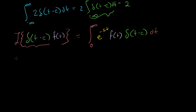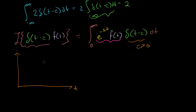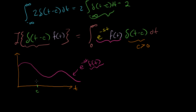Let me draw what we're trying to take the integral of. We only care from 0 to infinity, and I'll assume c is greater than 0 — that the delta function pops up somewhere on the positive t-axis. The first part, e to the minus st times f of t, is going to be some function. e to the minus st starts at 1 and drops down, but multiplied by some arbitrary f of t, it gives an arbitrary shape. Now graphing our Dirac delta function: it's 0 everywhere except right at c, where it pops up infinitely high. We draw an arrow of height 1 to indicate its area is 1.